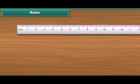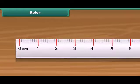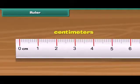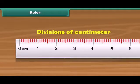You find many divisions on the margin of the ruler. Some lines are longer while others are smaller. The longer lines represent the number in centimeters. The small lines between two long lines represent divisions of centimeter.